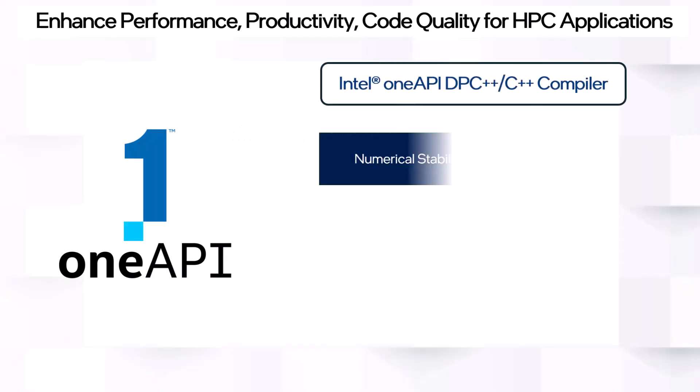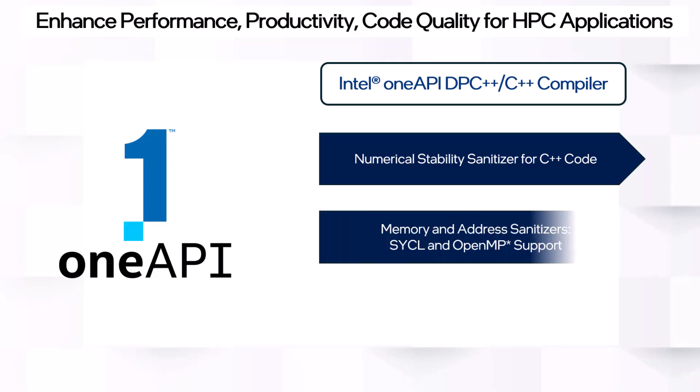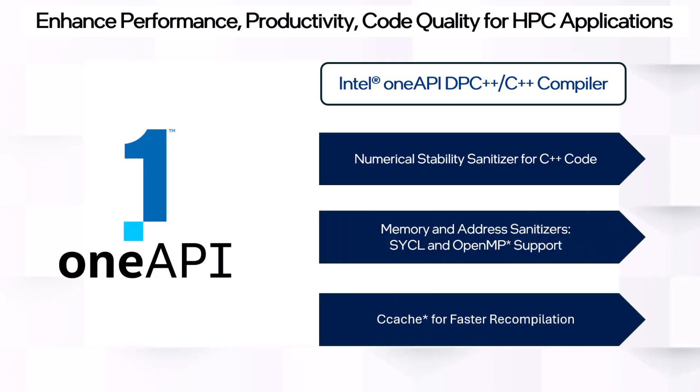The 2025.1 release of the Intel OneAPI DPC++ C++ compiler has introduced a numerical stability sanitizer for detecting floating point bugs in C++ code, while the memory and address sanitizers — meant for detecting the use of uninitialized memory and memory safety bugs respectively — now come with extensions for SYCL and OpenMP offload device code. The compiler has also introduced CCache, a fast C/C++ compiler cache that helps accelerate code recompilation.